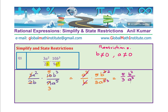The simplified form is 5b squared over 3a cubed. Remember to include the restriction: a is not equal to 0 and b is not equal to 0 — only then these expressions are equivalent. Notice that after simplification there was no b in the denominator; however, b not equal to 0 remains the restriction. We have to write restrictions before we simplify, after you factor.